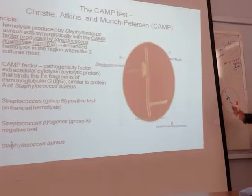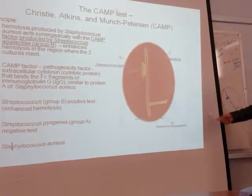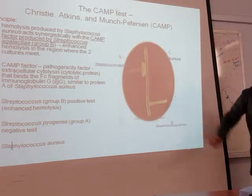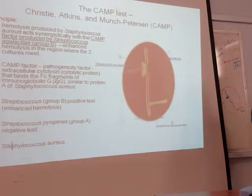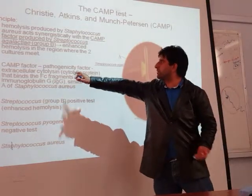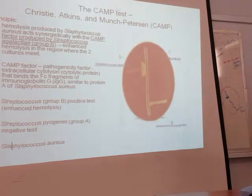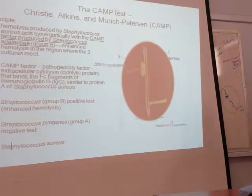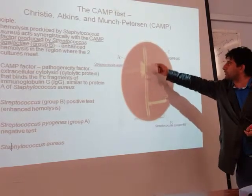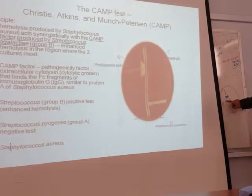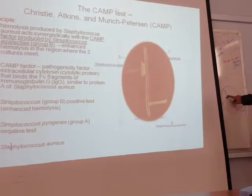They found beta hemolysis because both microorganisms — pyogenes and agalactiae — are beta-hemolytic. But in one area they found more hemolysis. Why more hemolysis? They discovered an extracellular cytolytic compound produced by Group A streptococcus which has a similar function to Protein A of Staphylococcus aureus. This enhances — makes more — destruction of the RBCs. The CAMP factor of Group B streptococci, combined with the Staphylococcus aureus effect, produces enhanced hemolysis.